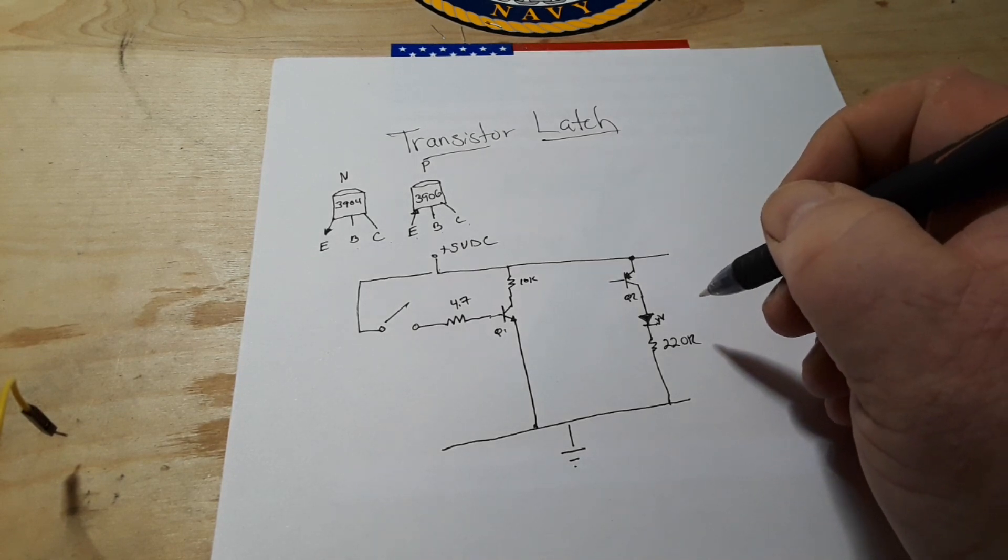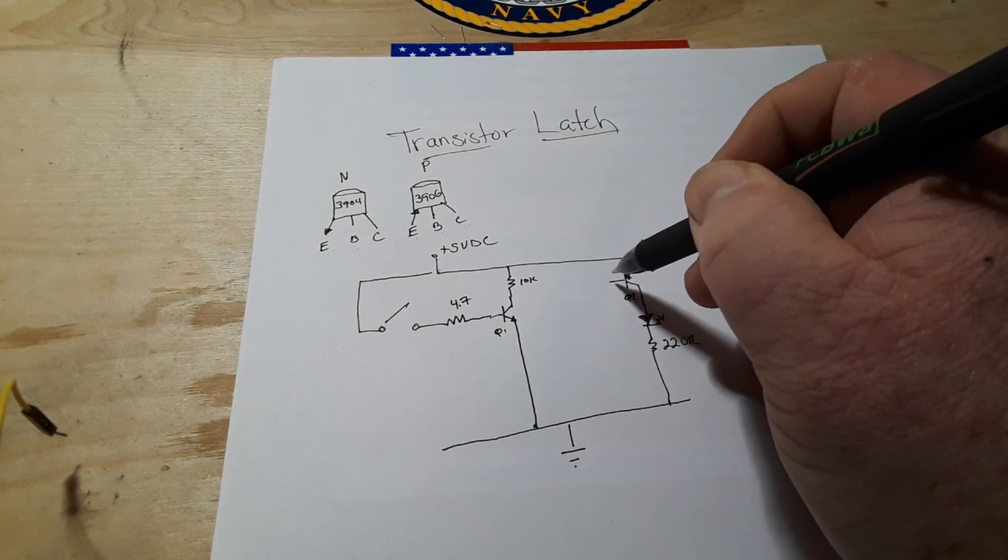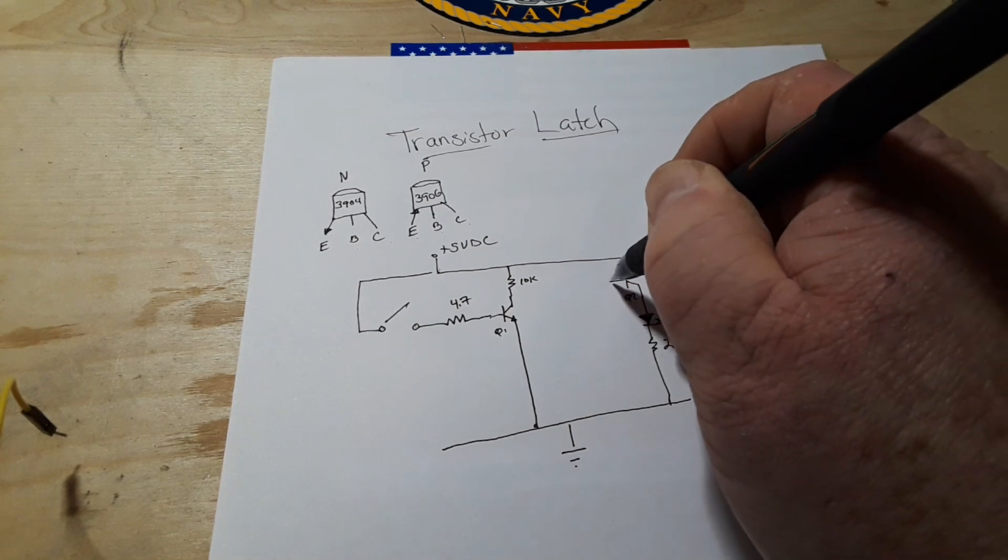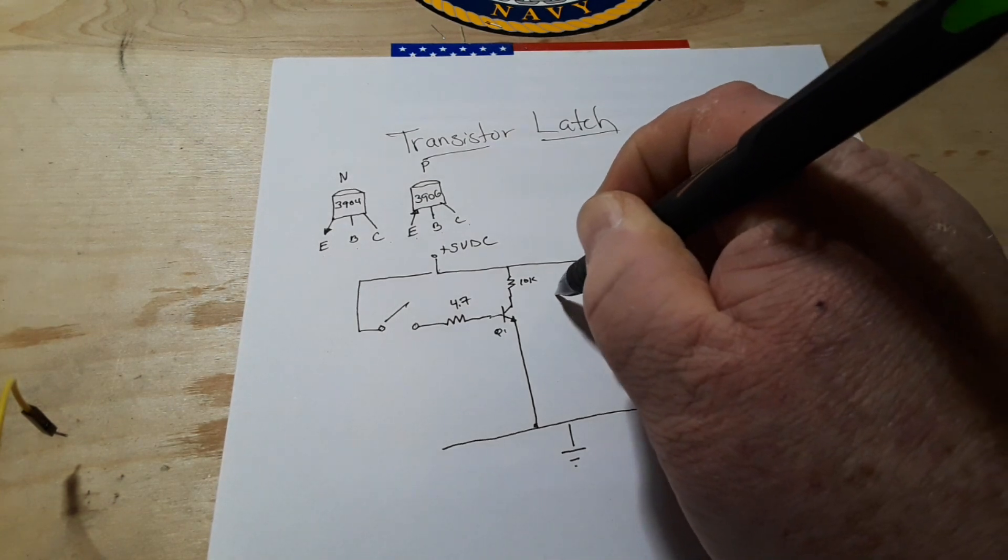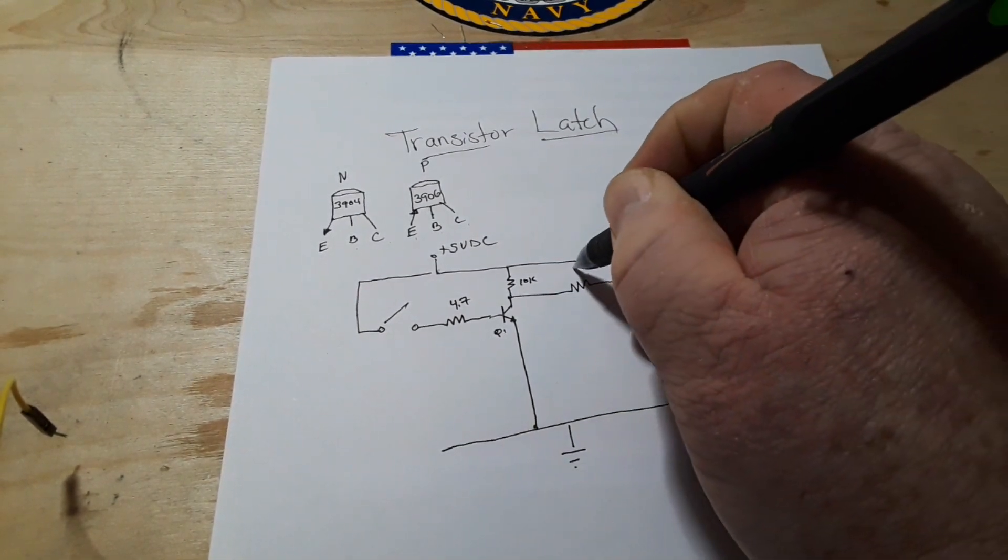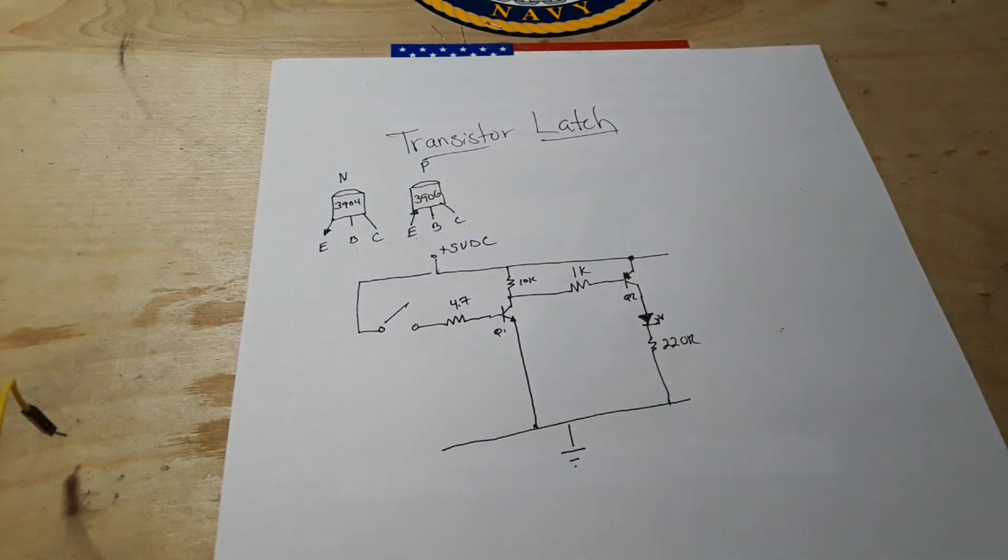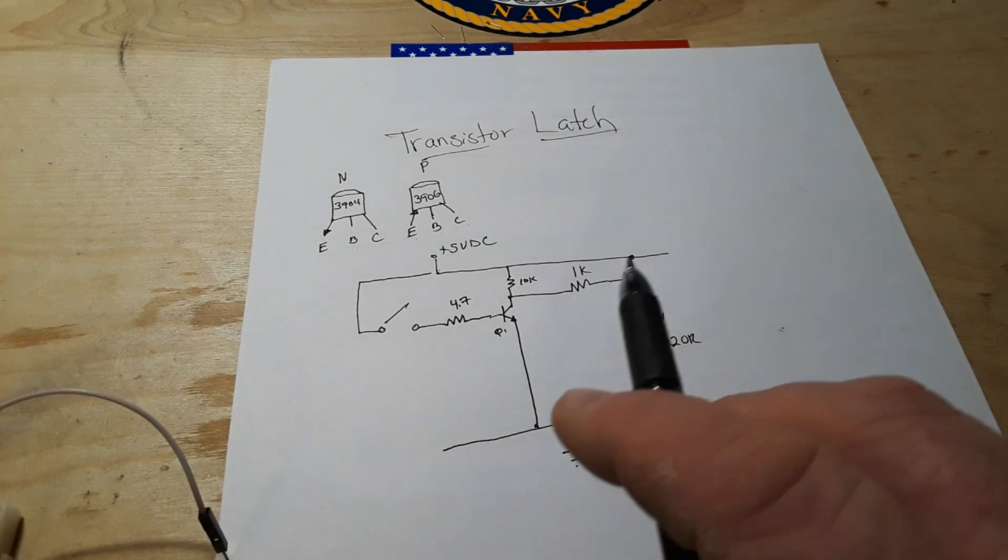All right so now the base of our Q2 our PNP gets connected to the power source with the 1k resistor and then here's where the magic comes in.